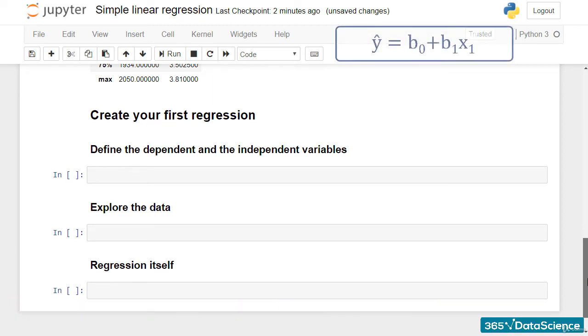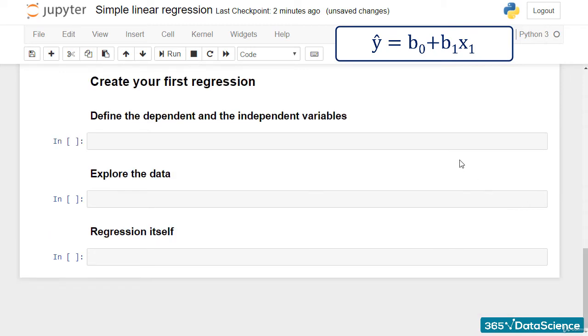Remember, the equation is y hat equals b0 plus b1 times x1. Our dependent variable is GPA, so I'll create a variable called y which will contain GPA. Just a reminder, the pandas syntax is quite simple. All I have to do is write the name of the data frame, in this case, data,